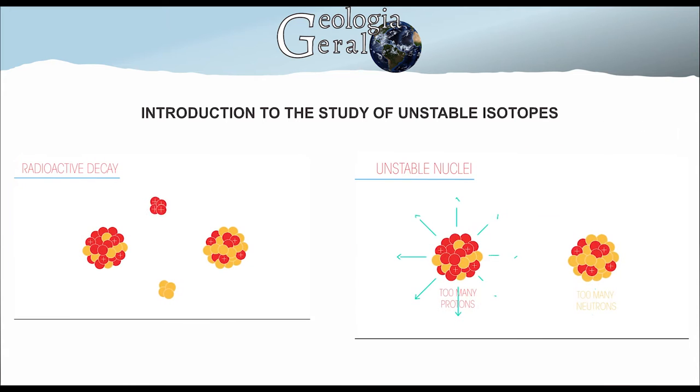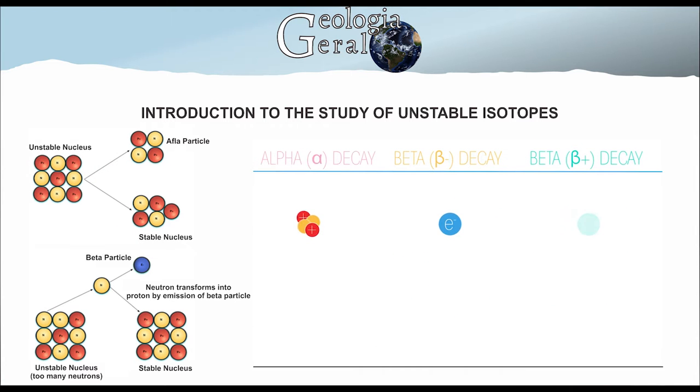Studies of unstable isotopes are carried out on the concept that radioactive elements decay from alpha and beta particles in order to achieve their stability.